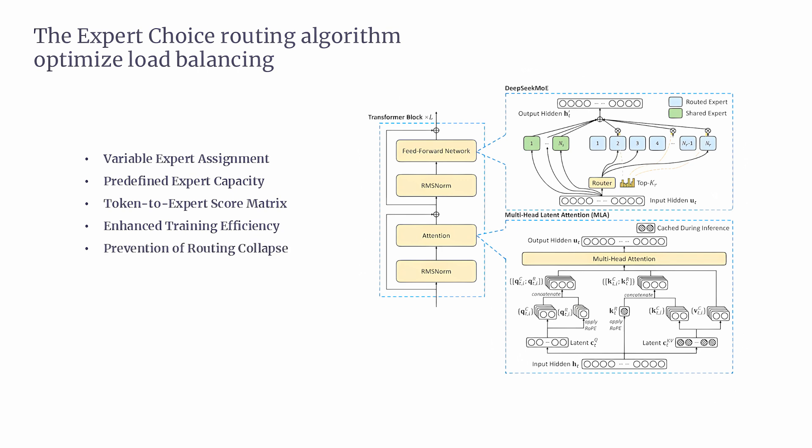The fifth feature is prevention of routing collapse. A common problem in traditional routing methods is routing collapse, where only a few experts get selected repeatedly, leaving others undertrained. This creates an imbalance and harms the model's overall performance. The EC algorithm prevents this by ensuring that tokens are evenly distributed across all the experts, which leads to a more balanced training environment. This results in more robust training, with all experts getting enough exposure to improve.